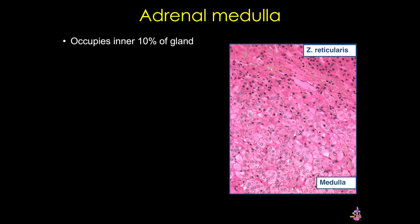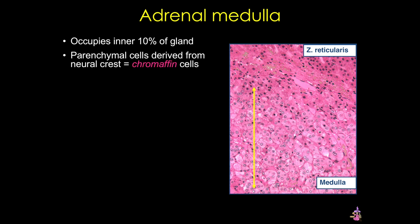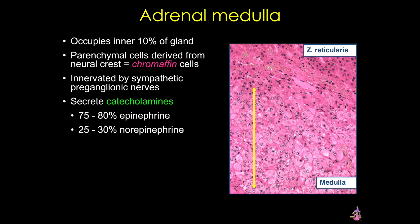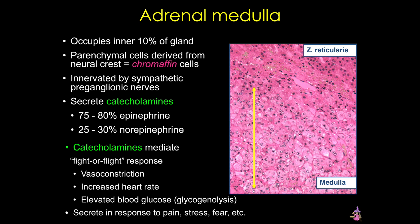The medulla occupies about 10% of the gland, and it's composed of large polyhedral cells arranged irregularly, although sometimes there are short cords that border a fenestrated capillary. These cells are often referred to as chromaffin cells because, using original stains, they stain brown or black in response to potassium dichromate. These cells are innervated by sympathetic preganglionic axons in the splanchnic nerve, and because they secrete catecholamines, chromaffin cells are considered modified postganglionic neurons. Catecholamines increase cardiac output, heart rate, and release of glucose from the liver while causing vasoconstriction in the skin and gut, and they're secreted in response to pain, stress, and fear.